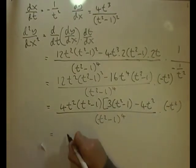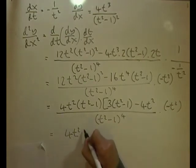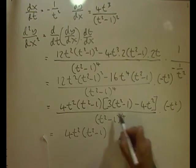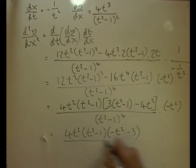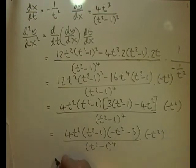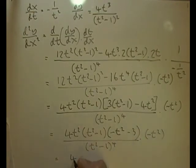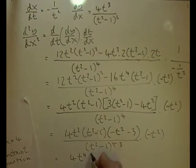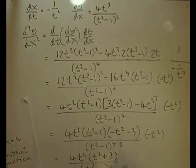After factoring, the numerator becomes 4t⁴(t²+3) — the negative reverses signs — over (t²−1)³, since one factor of (t²−1) cancels with common factors. So the second derivative is d²y/dx² = 4t⁴(t²+3)/(t²−1)³.